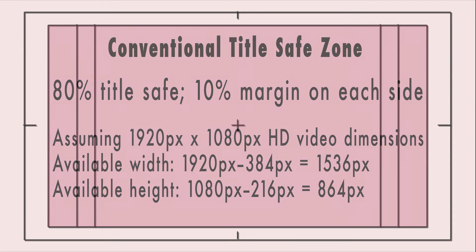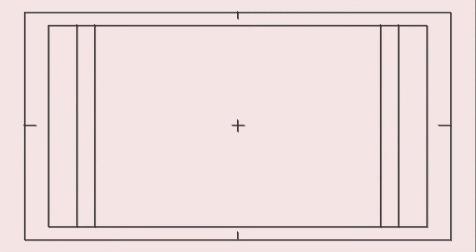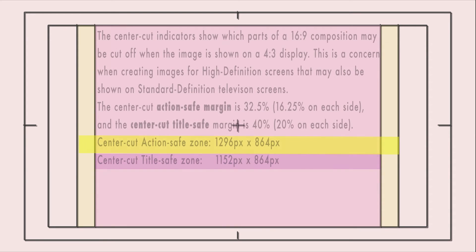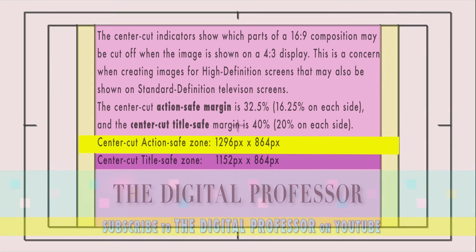This is the area where you're going to place your main graphics and your main titles. Now if you're going to display on a 4 by 3 screen, you have to be mindful of an even smaller area. The yellow area here is 1296 by 864 pixels for action, and the pink area is 1152 by 864 pixels for titles.